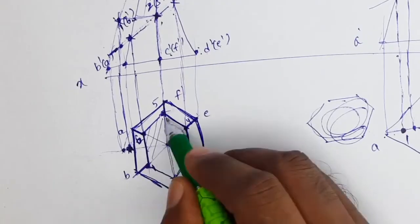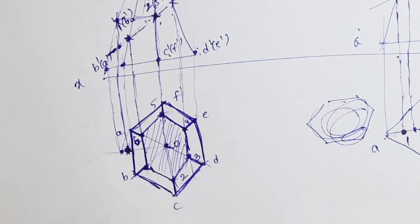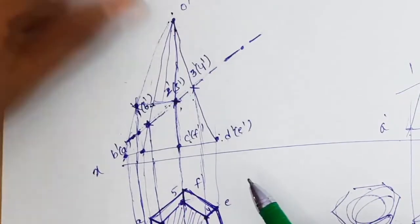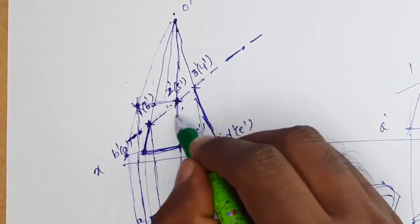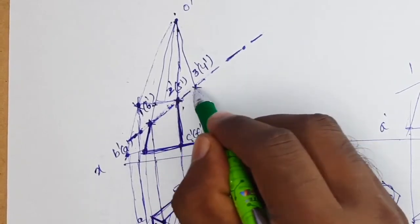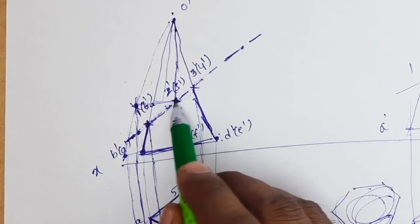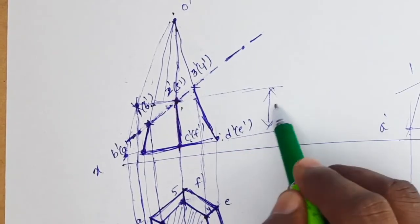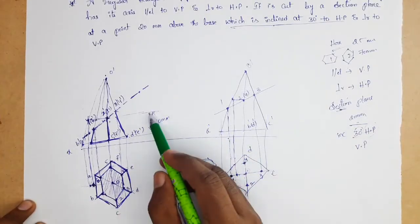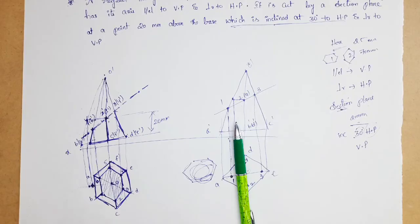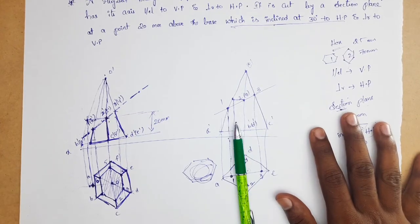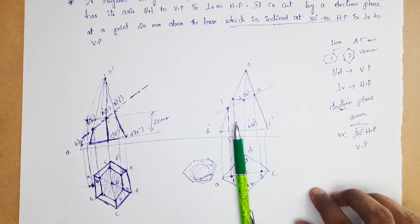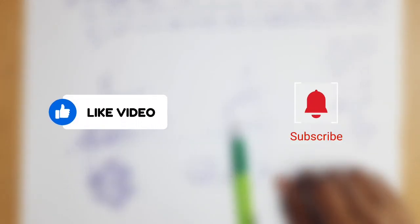Now we will do the hatching. As discussed in the last video, hatching is done at 45 degrees. The cut is 20mm above the base, and the section plane is inclined at 30 degrees. That's it — this is the completed drawing. I hope you understood well. If you have any doubts, please comment in the comment section. In the next video we will talk about the inclined prism. Thank you so much, my dear friends. Thanks a lot.